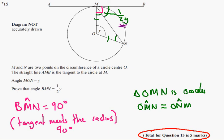So the first mark is for realising that the triangle OMN is an isosceles triangle, or that OMB is a tangent meeting the radius, so therefore 90 degrees. Either one of those would have got you the first mark.